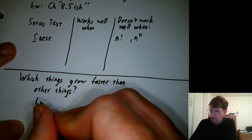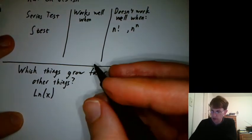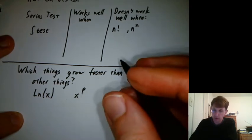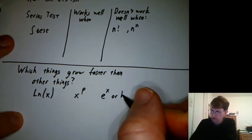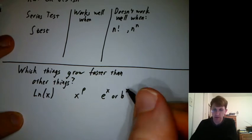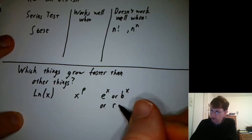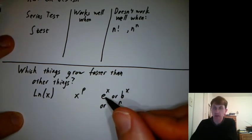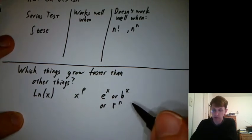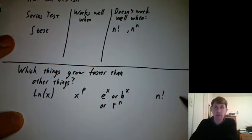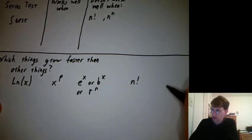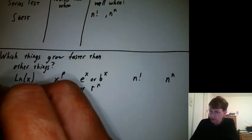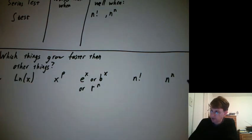So I'll say which things grow faster than other things. So remember, logarithms tend to grow pretty slowly. X to a power grows faster than logarithms. E to the x, or you could say b to the x, like some constant to the x. Or that's basically r to the n for geometrics. That's all constant to a variable power. And then n factorial grows even faster than that. And n to the n grows even faster than that. So this is at the slow end. And this is at the fast end.